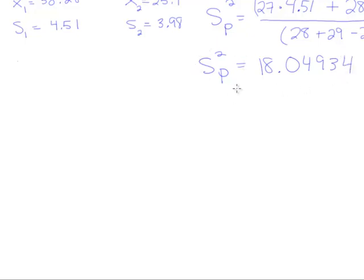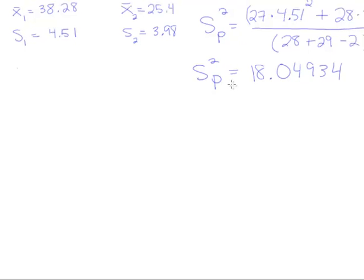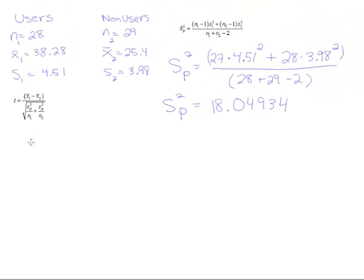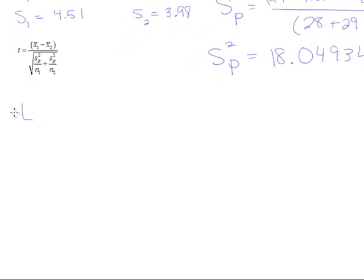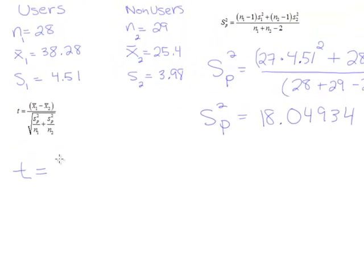So now we're going to use this quantity inside our test stat formula. So here's our test stat formula. Let's go ahead and put in the quantities that we have in front of us. So it will be t equals, we'll have the first x bar, 38.28, minus the second x bar, which is 25.4.